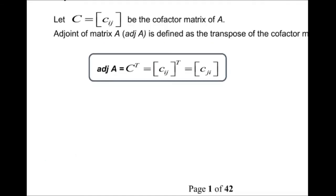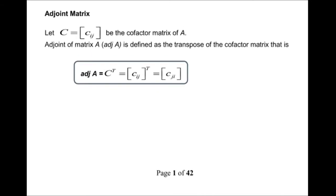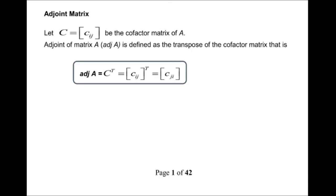Now we go to the explanation of what is the adjoint matrix. The adjoint matrix: let C equal to C_ij be the cofactor matrix of A. The adjoint matrix of A is defined as the transpose of the cofactor matrix. We write it as adj(A), which is also written as C to the power of T, or cofactor transpose.